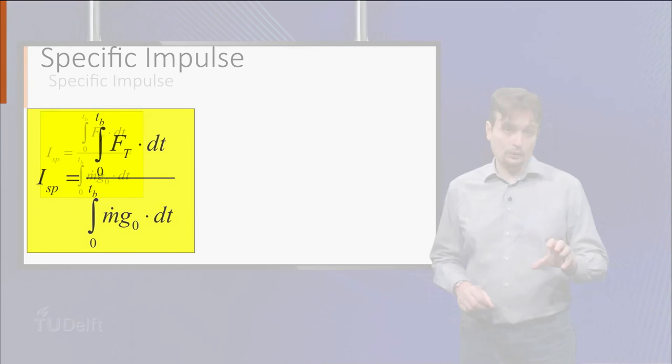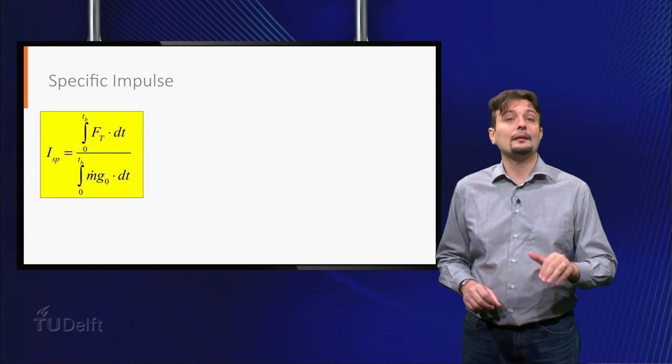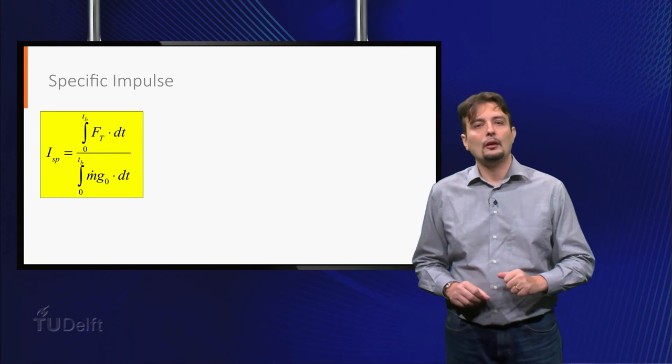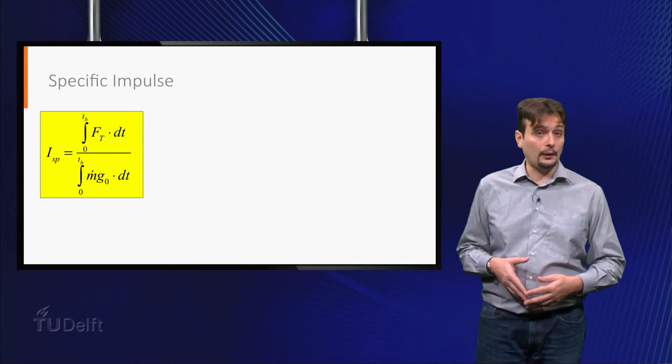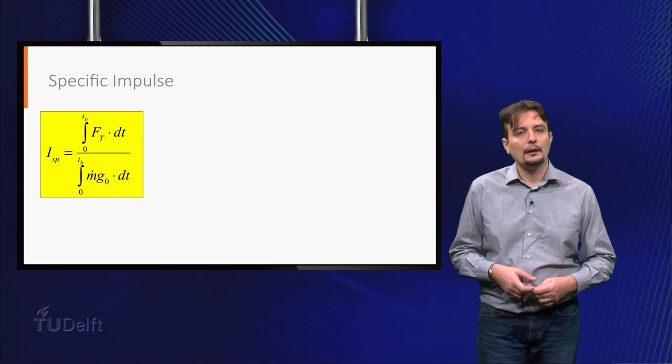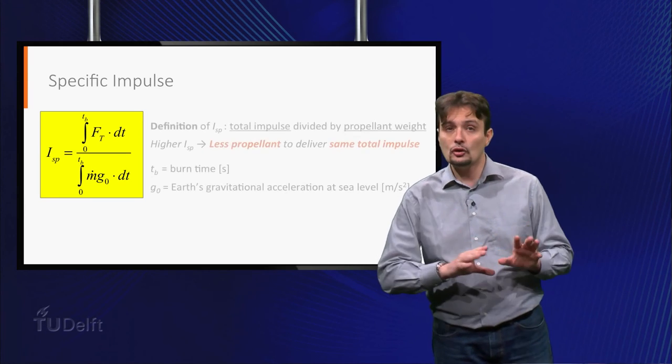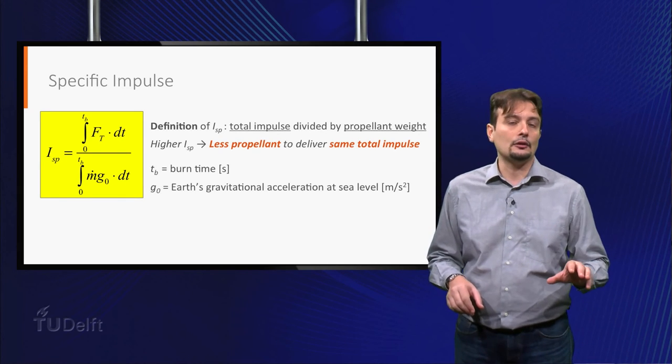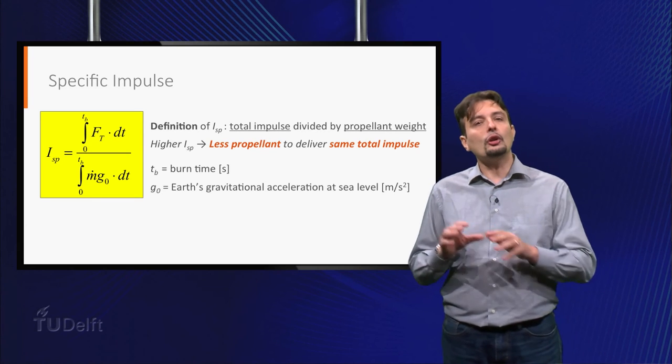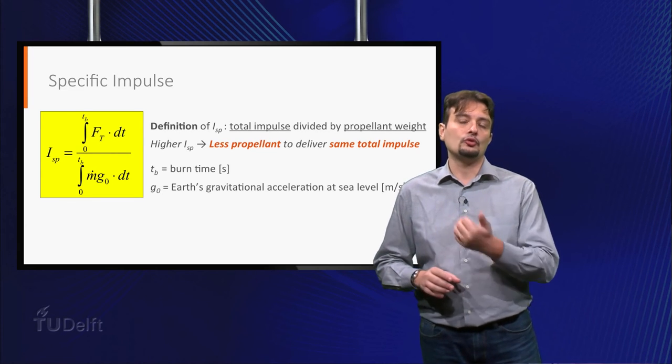Another very important performance parameter for a rocket is the specific impulse. What you see here is the complete mathematical definition of this parameter. In short, it is defined as the ratio of the total impulse generated by the rocket, that is, the thrust integrated over the burn time, to the total weight of propellant used to generate it.